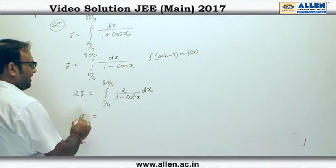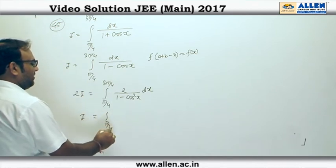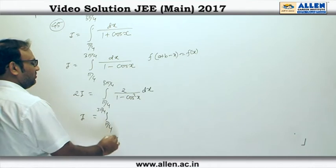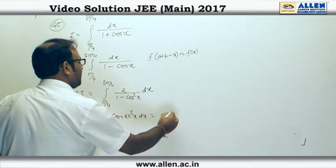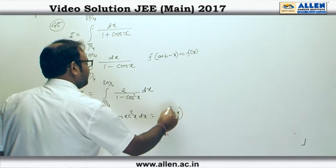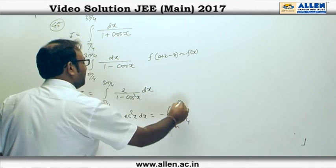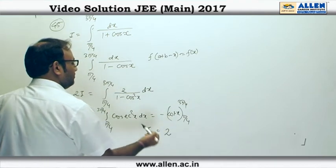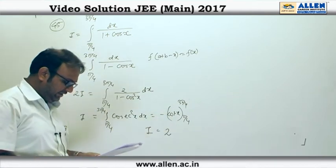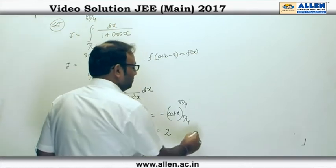So this is I equal to π/4 to 3π/4 cosec²x dx, which is -cot x from π/4 to 3π/4, which makes it 2. So the value of this definite integral is 2, which is option number 3.